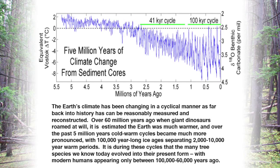This data can be taken back well into the time 65 million years ago when the dinosaurs existed. What this shows is that climate is always changing across the earth. The real question is how fast it changes and what the fluctuations are.